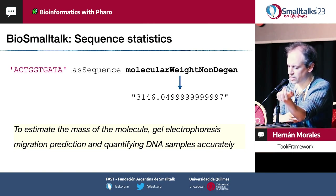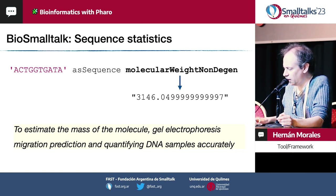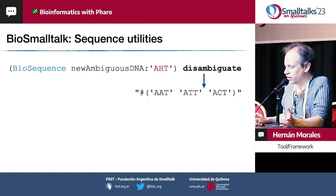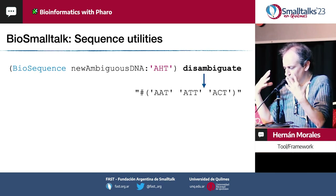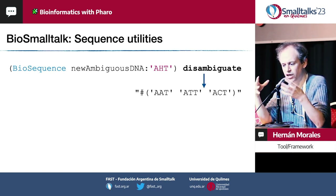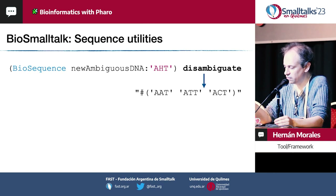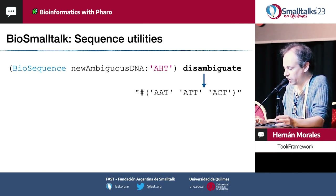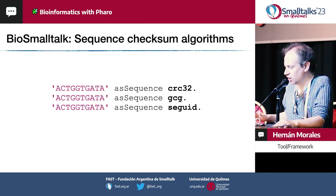Gel electrophoresis uses electricity to separate fragments of DNA and is used prior to PCR primer design. We have other statistics like local composition complexity, which reveals ratios with varying nucleotide composition. Since sequencers are not perfect machines, sometimes nucleotides are ambiguous — the sequencer couldn't read the base correctly at each position, so it is replaced by an ambiguous nucleotide that could translate to multiple nucleotides. There are sequence utilities for pattern matching and checksum algorithms.